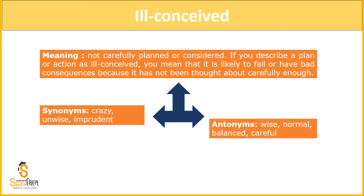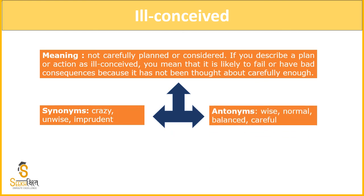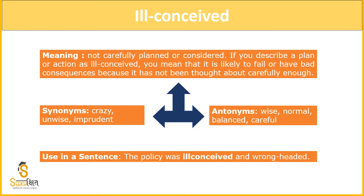Synonyms for ill-conceived are: crazy, unwise, imprudent. Crazy means no one thought properly — acting without thinking. Unwise means it is not a good decision; not every consequence was thought of. Antonyms are: wise, normal, balanced, careful. Using sentence: 'The policy was ill-conceived and wrong-headed' — like the bridge example, the blueprint was not good and those who had to execute it did not plan well.